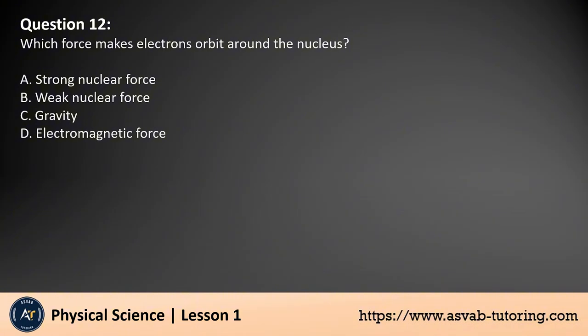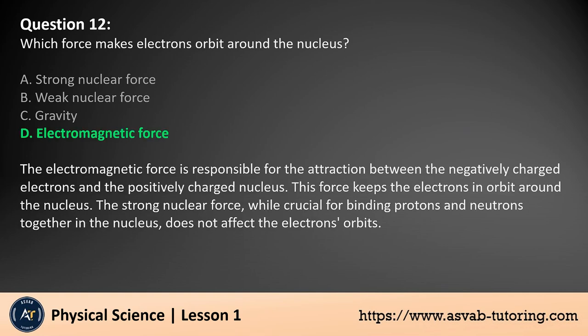Question 12: Which force makes electrons orbit around the nucleus? A. Strong nuclear force, B. Weak nuclear force, C. Gravity, D. Electromagnetic force. The answer is D. The electromagnetic force is responsible for the attraction between the negatively charged electrons and the positively charged nucleus. This force keeps the electrons in orbit around the nucleus. The strong nuclear force, while crucial for binding protons and neutrons together in the nucleus, does not affect the electrons' orbits.